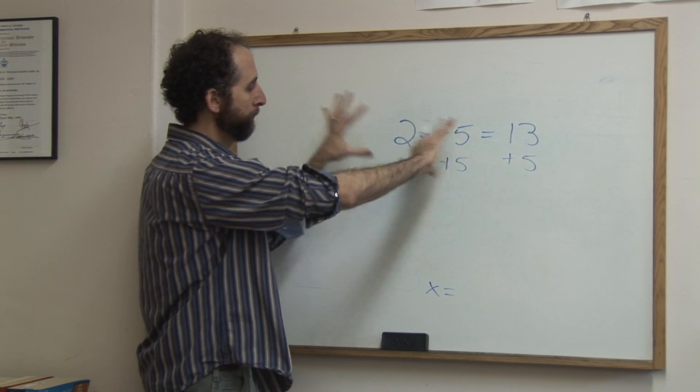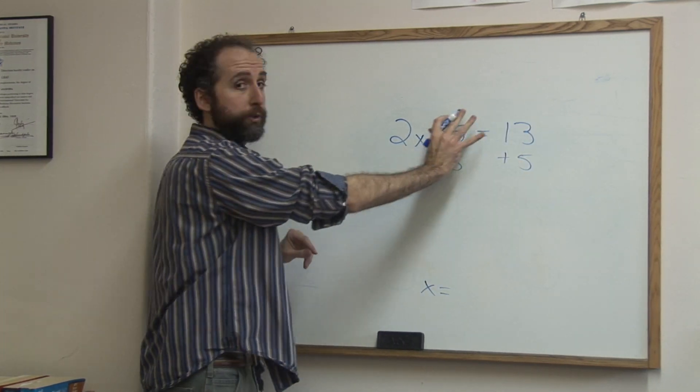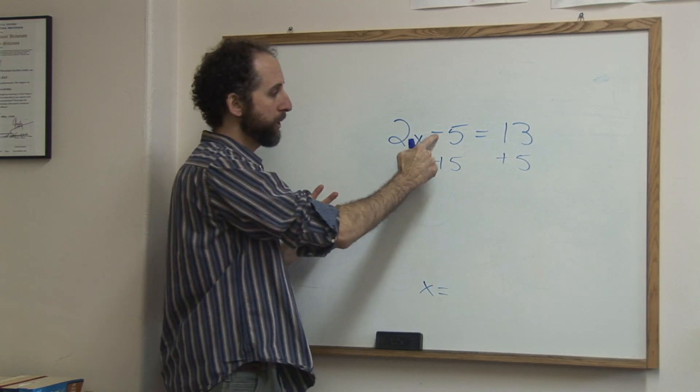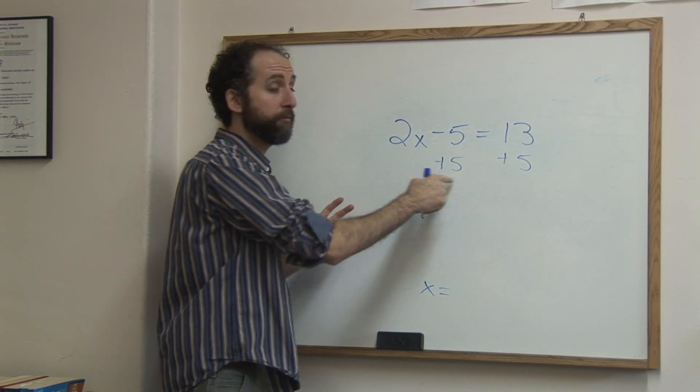And the way we clear it away is we're going to clear away what's furthest first. Sometimes I think of it that way. So we're going to clear this away. Now how do you clear it away? Because it's minus 5, we're going to add 5 to both sides.